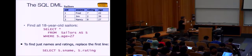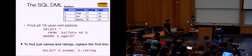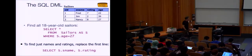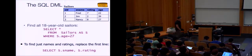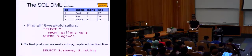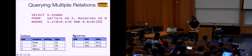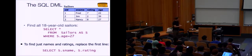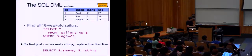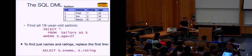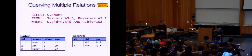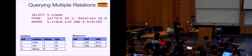Here's our first query. Find all 18-year-old sailors: 'SELECT * FROM sailors AS S WHERE S.age = 27.' We're pretty clear what's going to come out — it's going to be Nancy. And if you didn't want all the columns, you could list which columns you wanted in the select list.